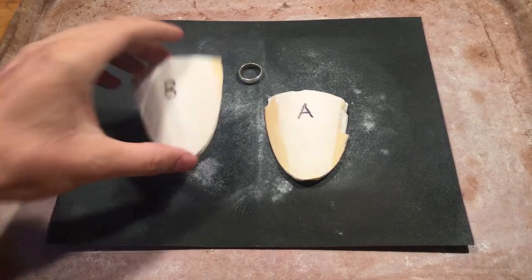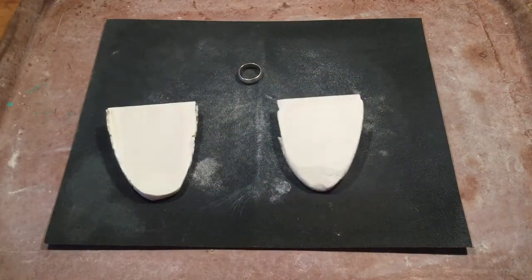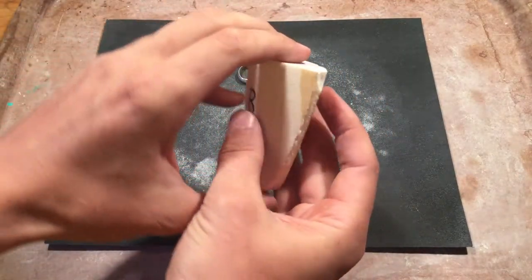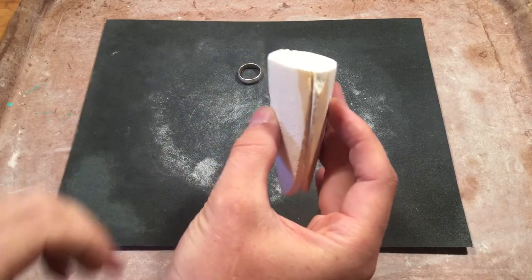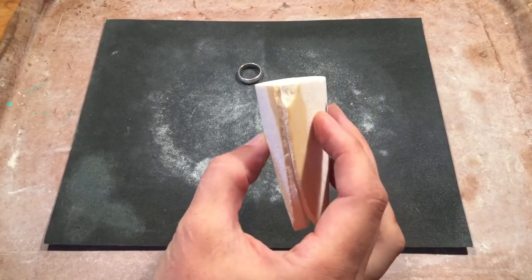We have part B, which is flat, and part A, which is flat, and both of these two parts meet up so that we can get a nice, perfect, flat, square, 90-degree surface to where they join.